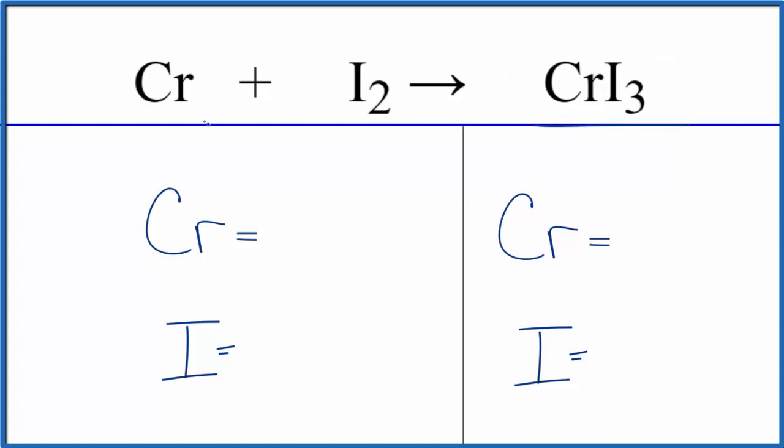So to balance the equation we count the atoms up. We have one chromium, we have two iodine atoms over here, one chromium, and then three iodine atoms.